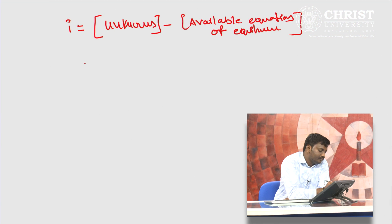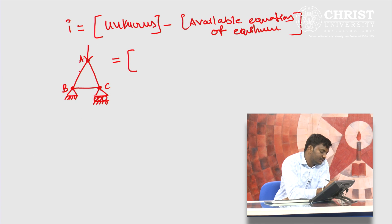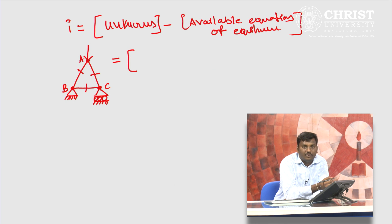Let us now consider a simple pin jointed frame. I have a hinge at one support and a roller at the other support. I am going to apply a force at these hinge joints. I am going to call them A, B, C. What are the unknowns in this? Unknowns are internal forces. What are the internal forces? That is the axial force in each member. Remember, a truss cannot resist any bending moment or shear force. If you are asked what is the bending moment at a section somewhere in member AC, your answer should be 0.